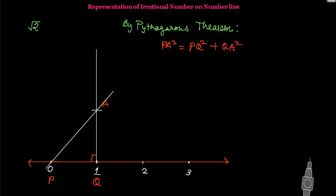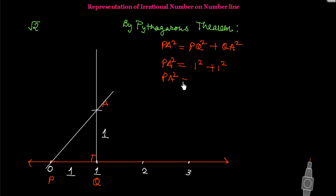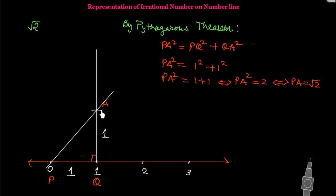Here we know that the distance from P to Q is 1 unit and Q to A is also 1 unit. So PA squared equals 1 squared plus 1 squared, which gives PA squared equals 1 plus 1, therefore PA squared equals 2. Taking the square root, PA is equal to square root of 2.